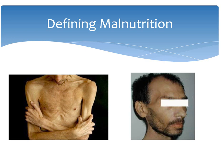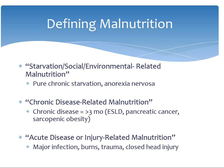There are three types of malnutrition that we diagnose. The first being starvation, social or environmental related malnutrition. This can be a patient with anorexia nervosa who comes in and we diagnose them as malnourished, or maybe a single elderly patient that is homebound and has limited access to food. The next type is chronic disease related malnutrition, which can range from a patient with cancer and significant weight loss to a patient with end-stage liver disease who has ascites, extreme wasting on their extremities, and can't eat because they feel so full.